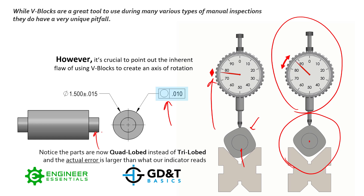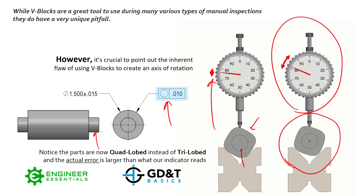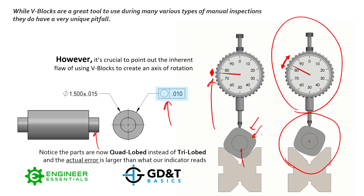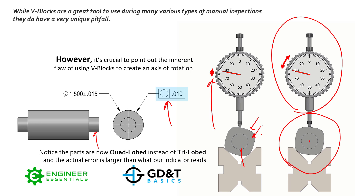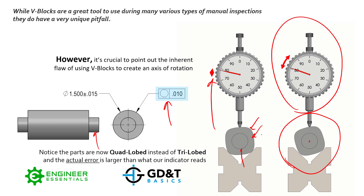This problem also exists with runout — we showed you circularity here, but runout is no different. If we were to set this part on the two smaller ODs as the datum, those could also have their own trilobing, which would then affect the runout measurement of the larger diameter. If your tolerances are very tight, use a runout checker or a polar probe. Otherwise, v-blocks are good sanity checks — just know what can happen when using them.